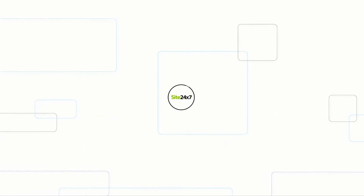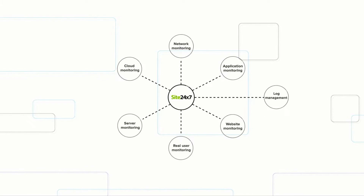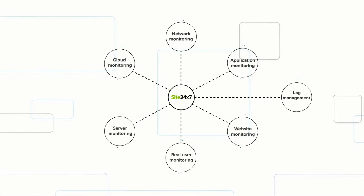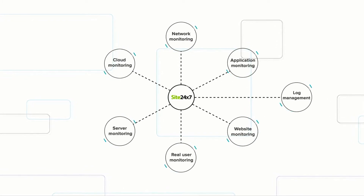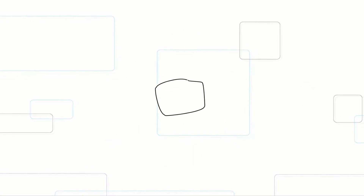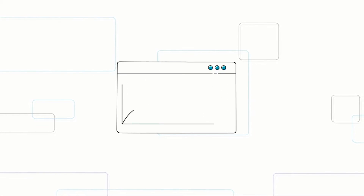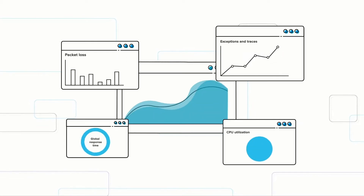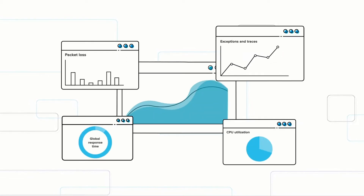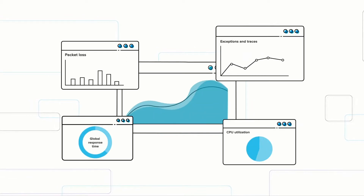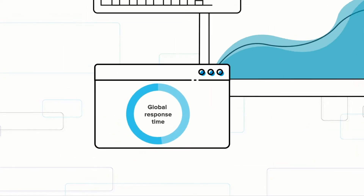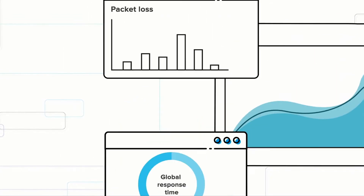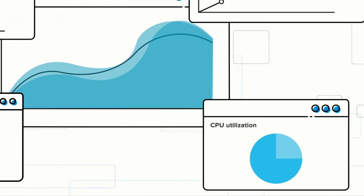As an MSP, you need a full-stack monitoring platform with a unified console like Site247 to view all your client's crucial data in a single place. Site247 helps you keep track of the uptime and measure the performance of end-user applications.